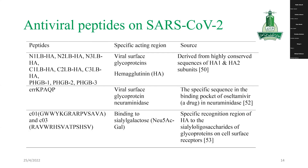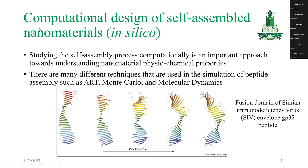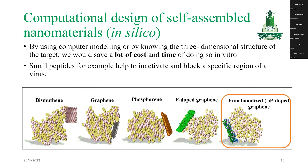Now we will talk about computational design of self-assembled nanomaterials. In silico study of the self-assembled nanomaterials' physical and chemical properties is done before actual in vivo or in vitro work. There are many different techniques used in simulation of peptide assembly, for example molecular dynamics. Here is an example of a peptide showing how, using molecular dynamics, it self-assembles. Computer modeling helps identify structures.